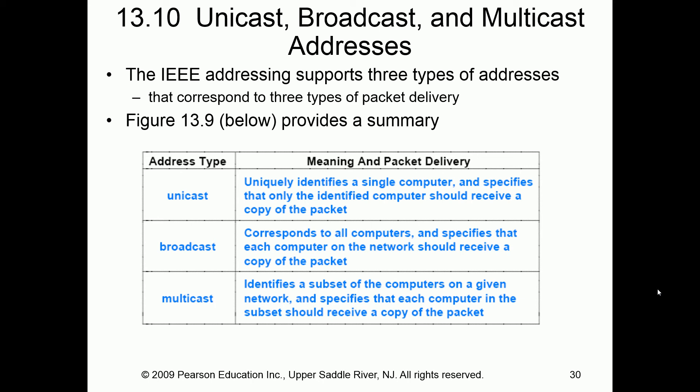To generalize: unicast is mailing a letter from one person to another person. Broadcast is blanketing an area — mailing it to everyone. Multicast is mailing it to a specific group, like just people with a certain criteria — not everyone, but not just one.